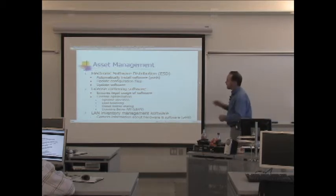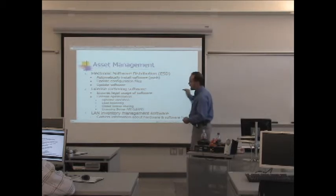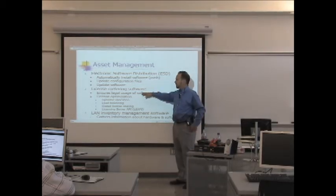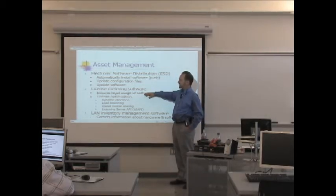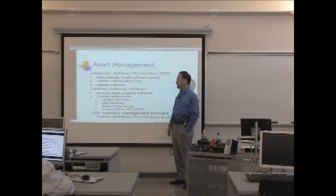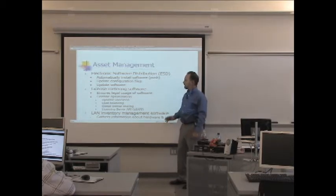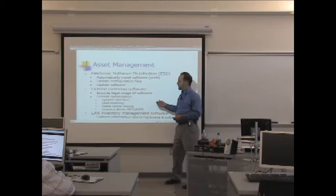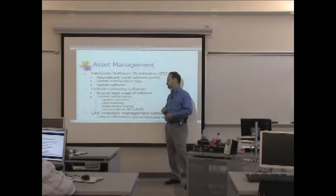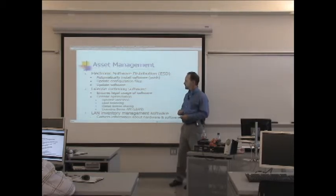One of the main aspects of license metering originally was ensuring that we are within the legal parameters for usage of that software—that we don't have more users using the software than we have licenses. But a new technology has come out of license metering that was not its original intended purpose, and it's referred to as license optimization. With license optimization, we as a company can be